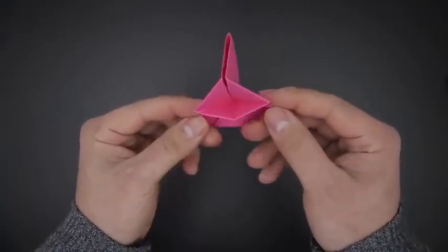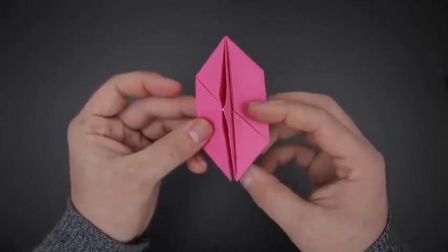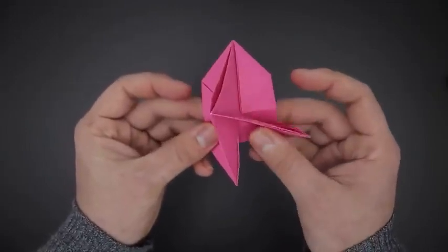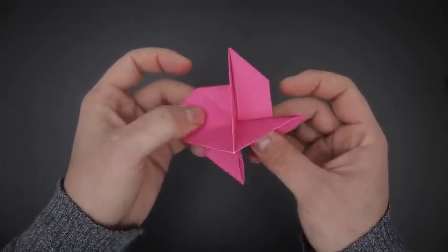Now going back to the other side, we have these four flaps. We'll have to open them, leaving each one to one side. Something like a propeller or a ninja star.